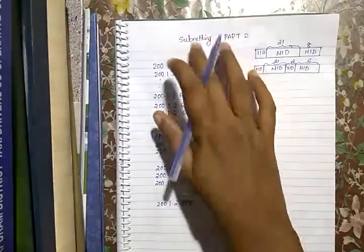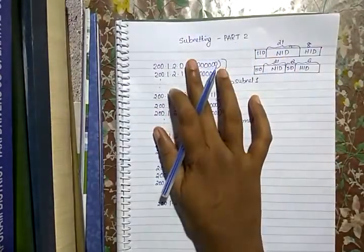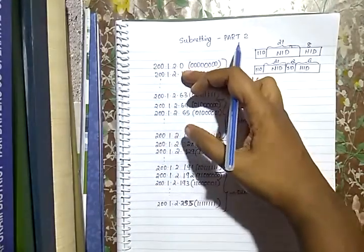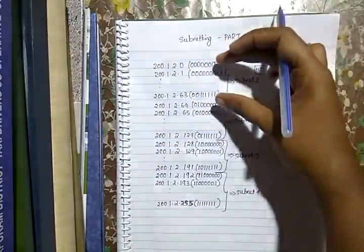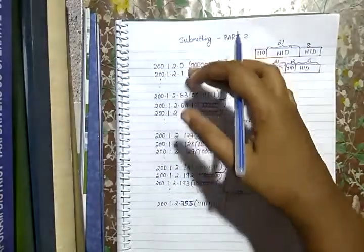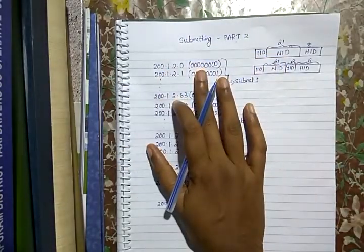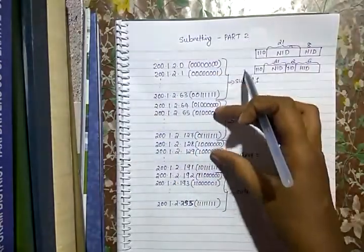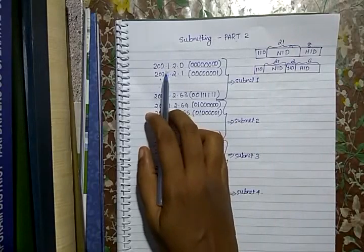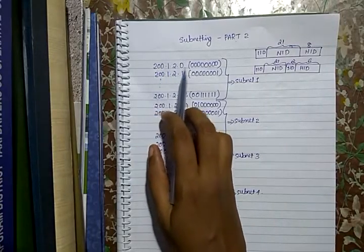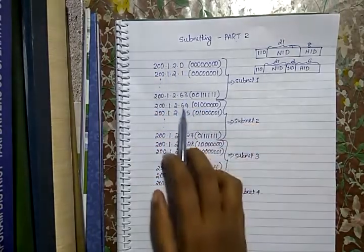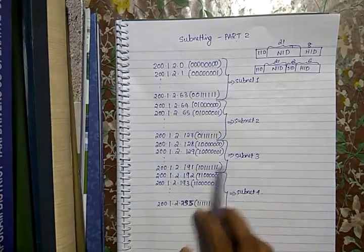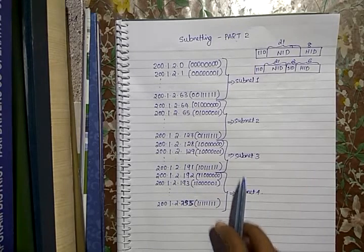This is Part 2 on the topic of subnetting. We take the example 200.1.2.0, given to a particular organization. The organization divided that 256 different addresses in that Class C network into four parts, each having 64 combinations. Addresses range from 200.1.2.0–63 in subnet 1, 64–127 in subnet 2, 128–191 in subnet 3, and 192–255 in subnet 4.